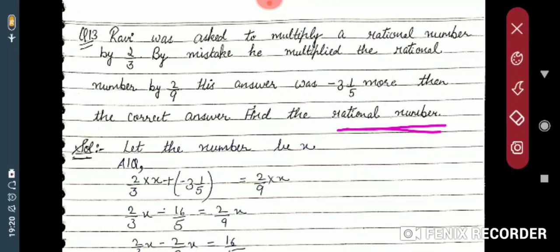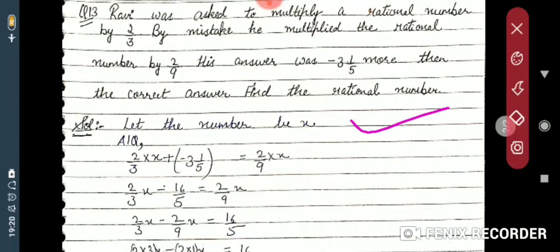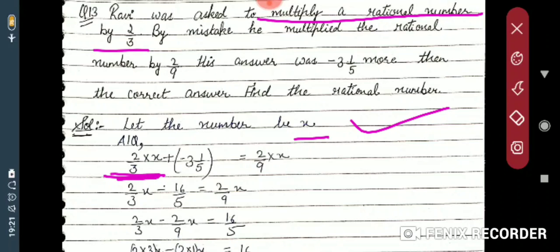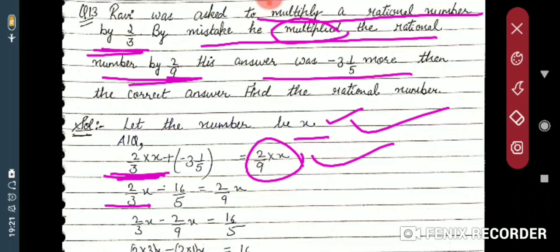Let the rational number be x. Ravi was asked to multiply by 2/3, so the correct answer is (2/3)x. But by mistake he multiplied by 2/9, so his answer is (2/9)x. His answer was minus 3 and 1/5 more than the correct answer.